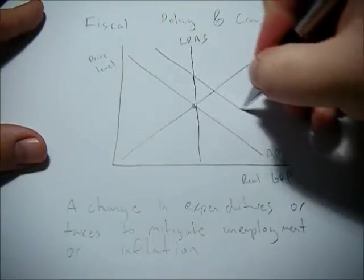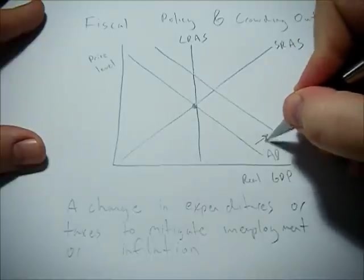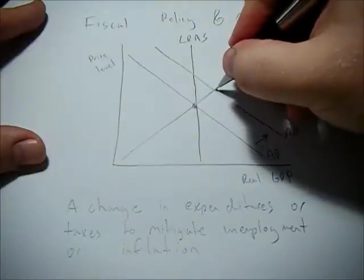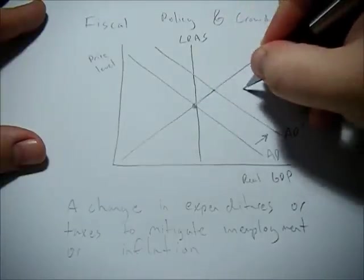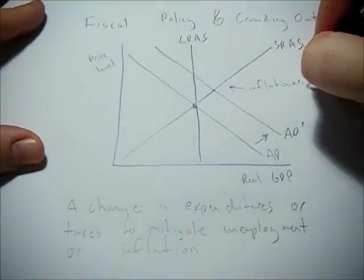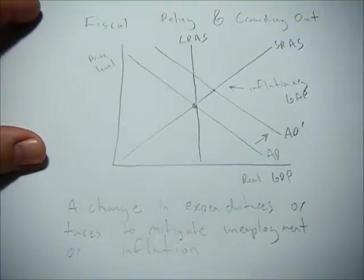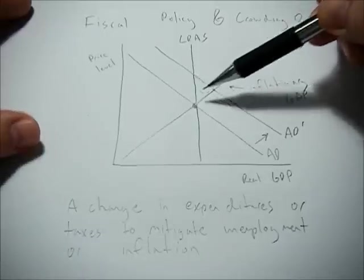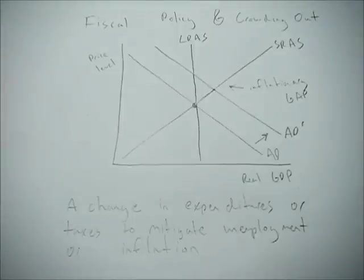Let's say that aggregate demand were to increase. We are now in an inflationary gap. Because what's going to happen in the long run is prices are going to go up. So we'll still be at the same old GDP level.